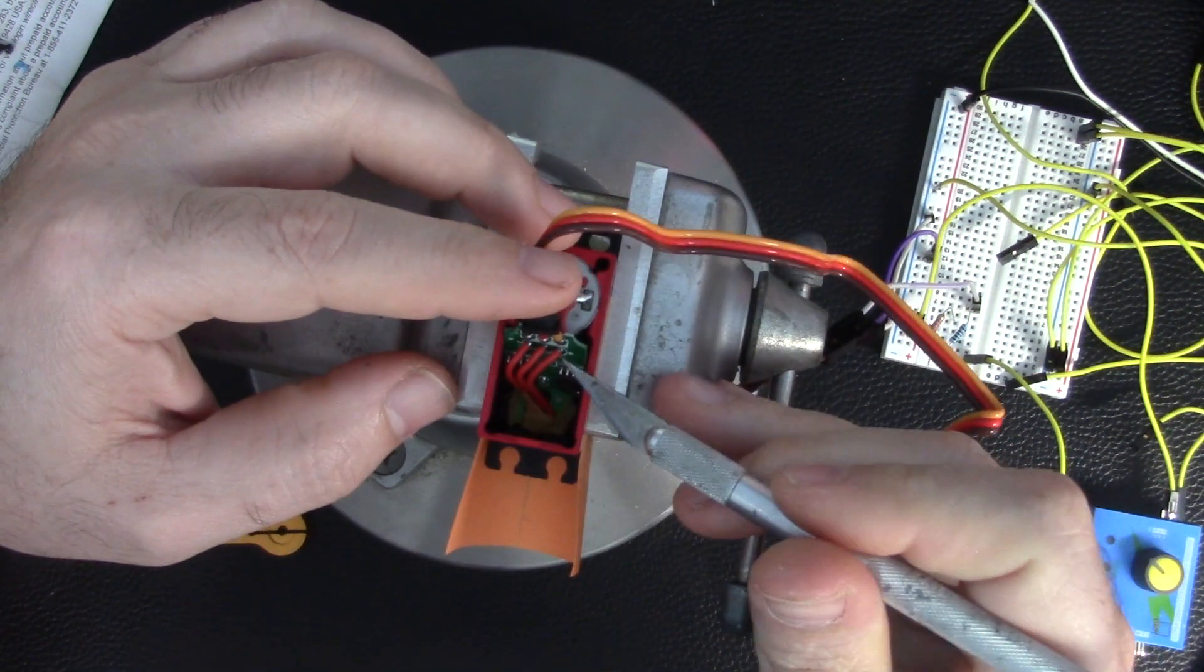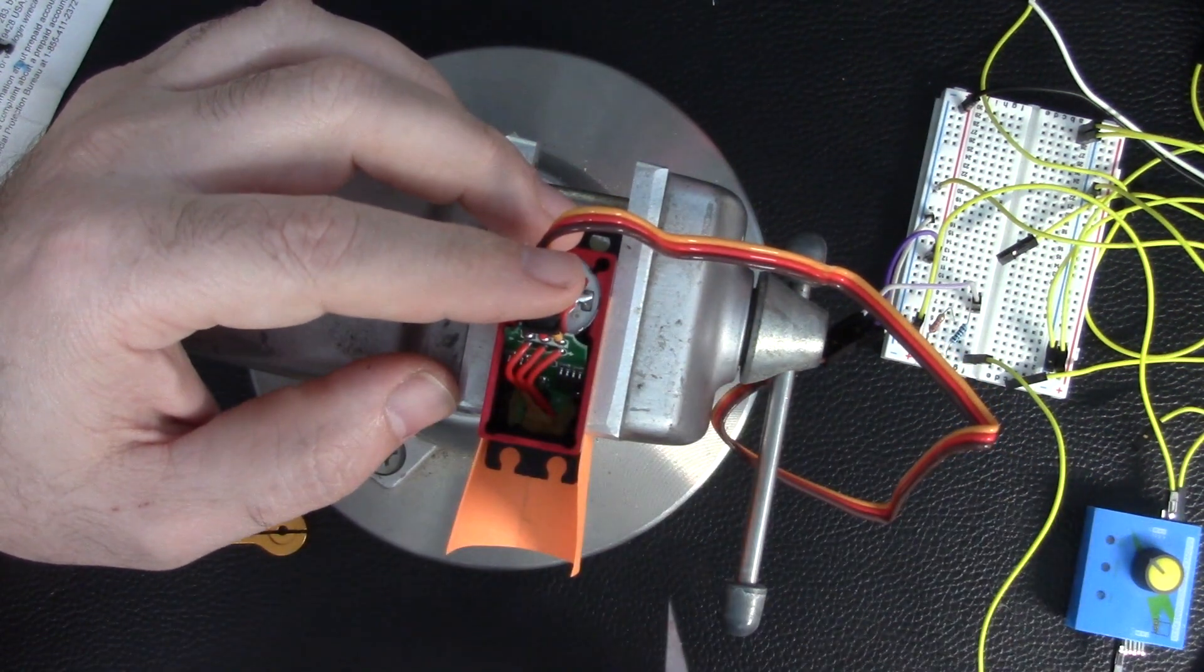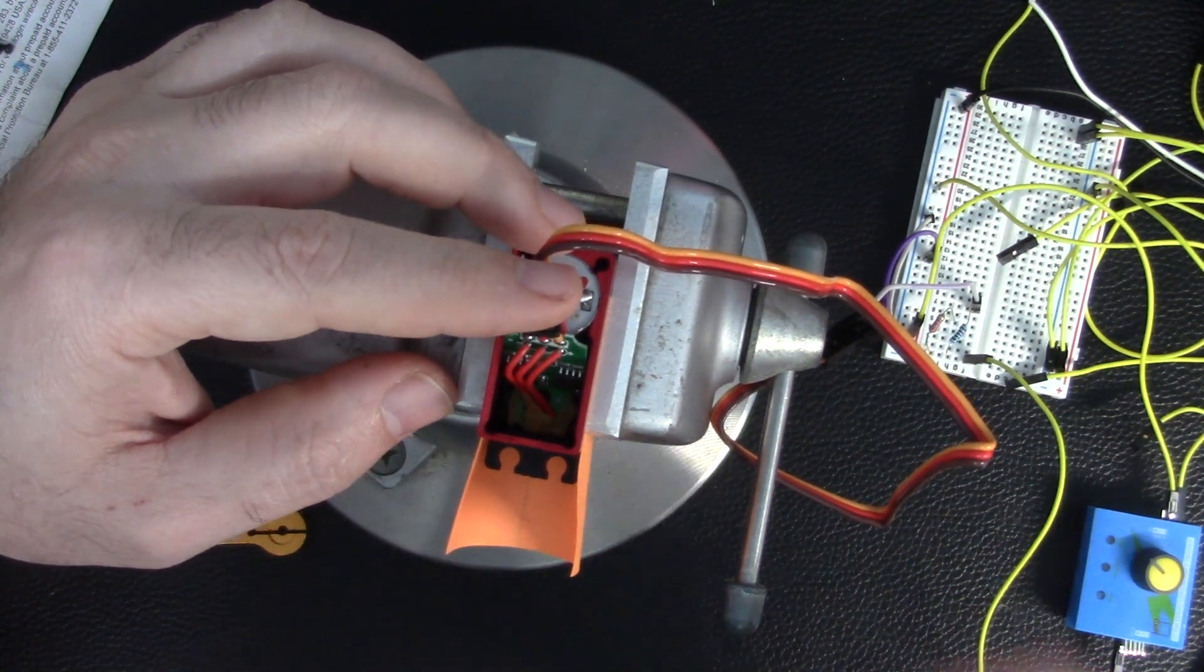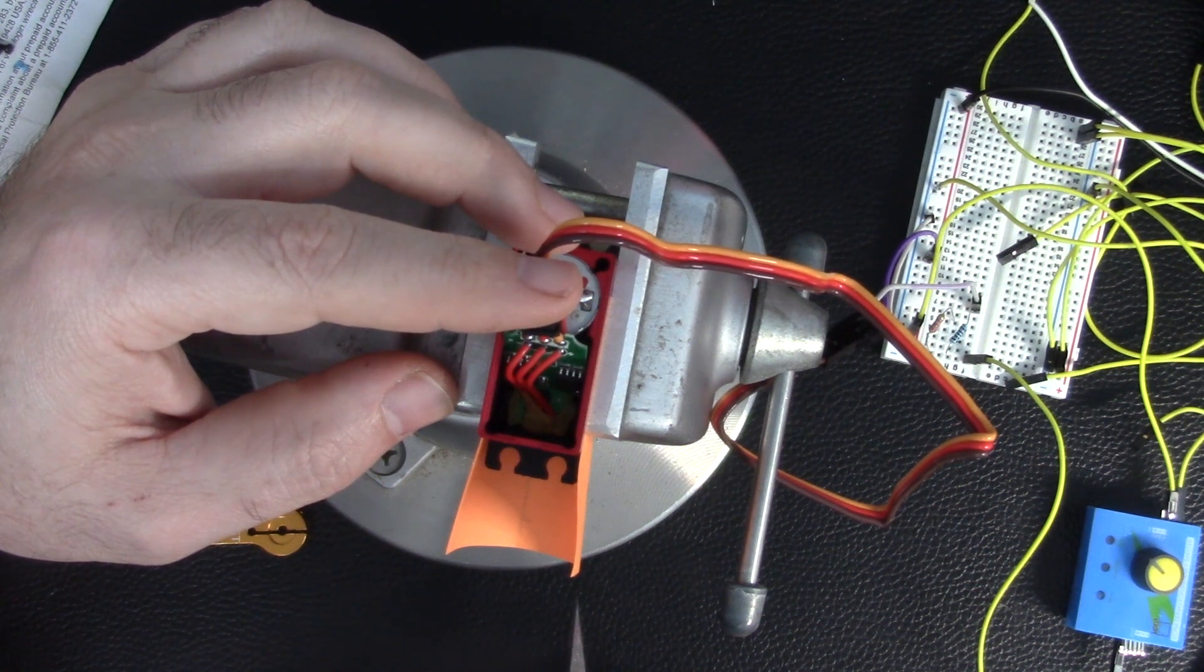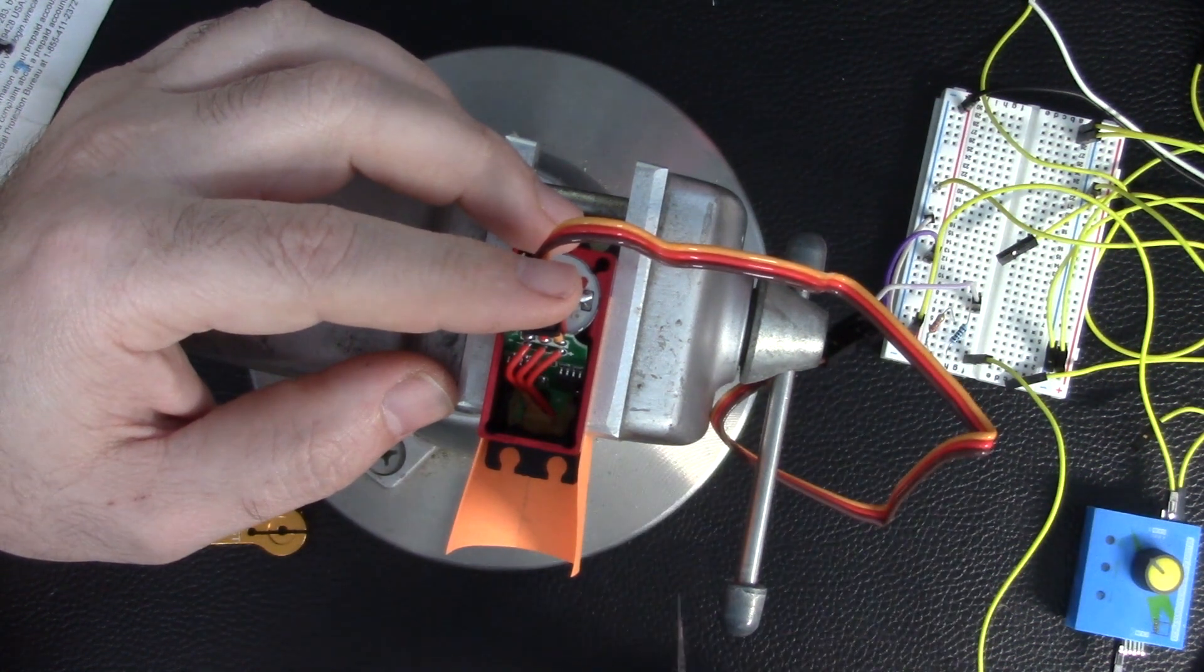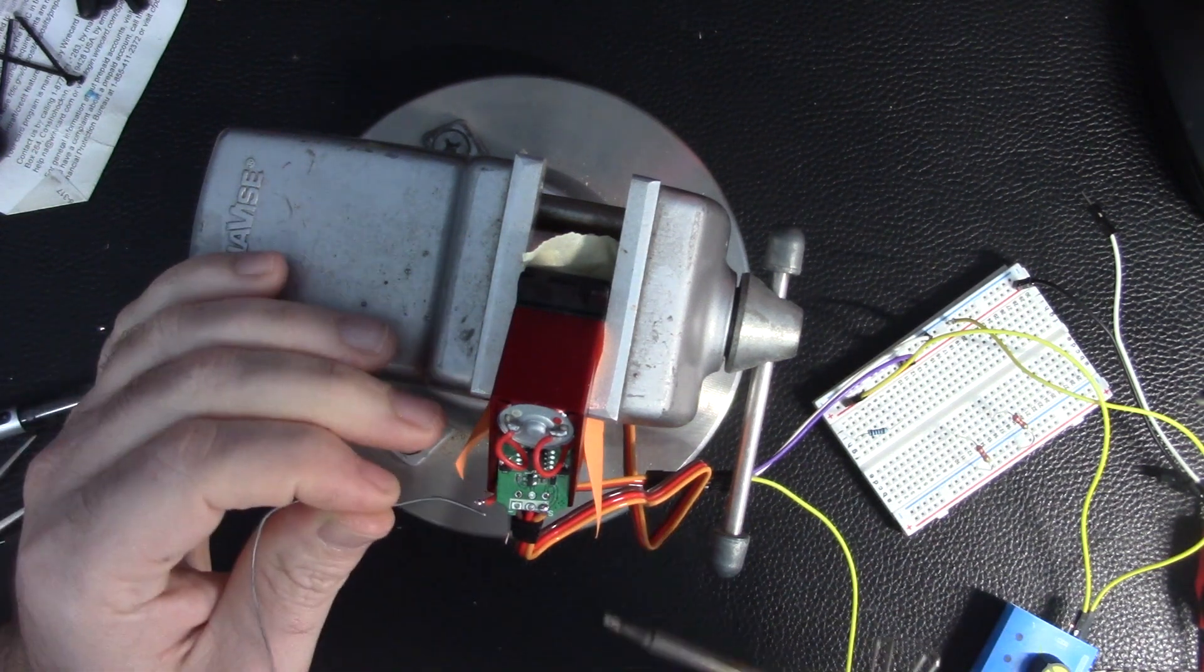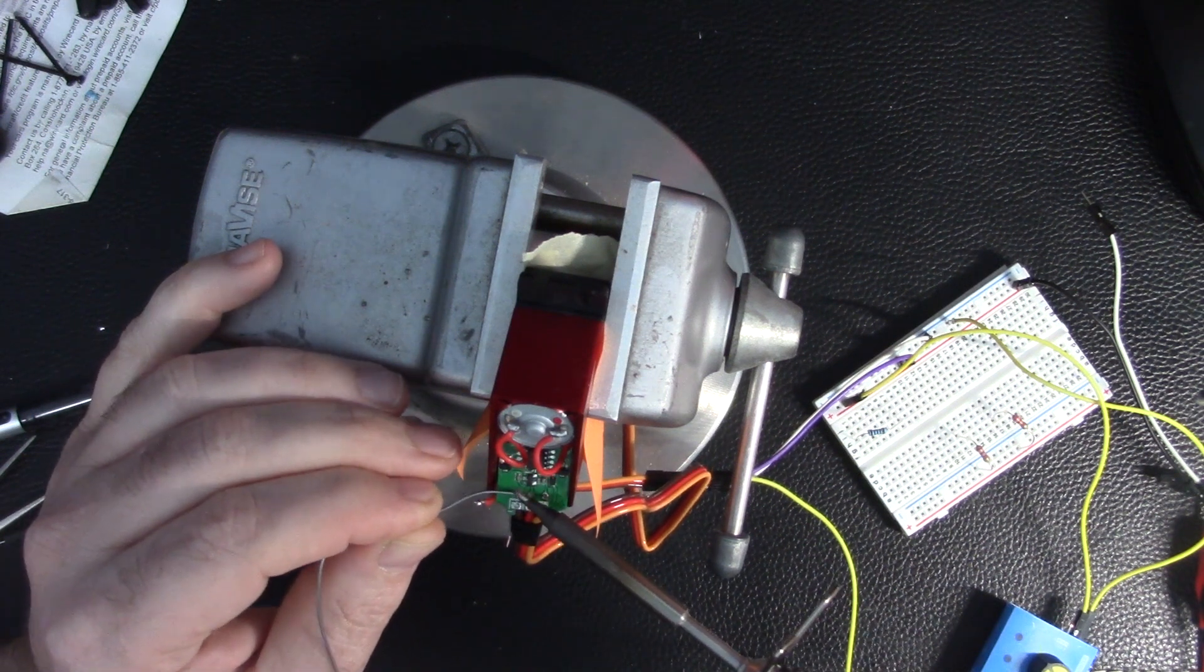If we take these two outer wires and we put a 2.2k resistor in there, that's supposed to give us more throw and get us to that 180 degrees that we're looking for. So I desoldered these two outermost wires on the left and the right and added some pigtails in there. Let's just solder them in quick.